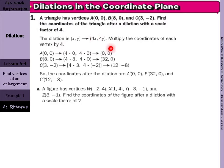(0, 0) stays (0, 0), (8, 0) becomes (32, 0), and (3, -2) becomes (12, -8).